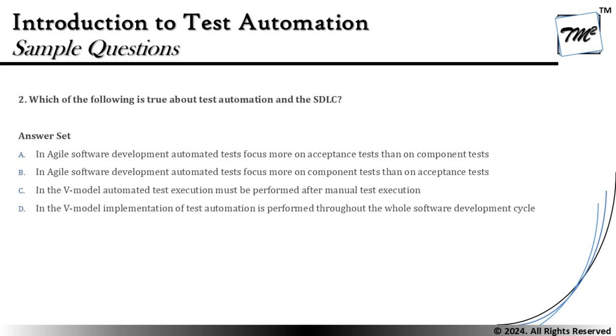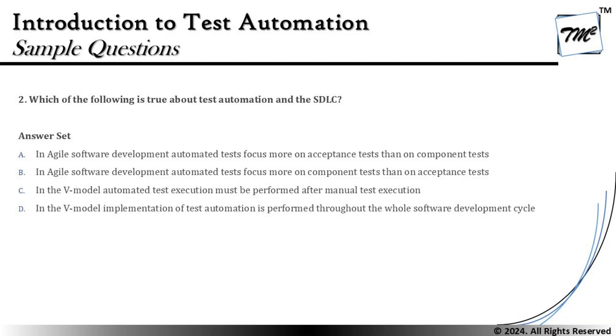Option A says: in agile software development, automated tests focus more on acceptance test than on component test. That is exactly vice versa. From the ISTQB Foundation, the test pyramid shows that in agile methodology we spend a lot of time on unit testing to find defects early. We write more concrete test cases, so more automation happens at the component level rather than at the acceptance level.